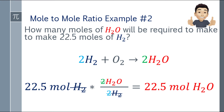So for the question 'how many moles of H2O will be required to make 22.5 moles of H2?' — the answer is 22.5 moles of H2O. For every 22.5 moles of H2, there will be 22.5 moles of H2O.